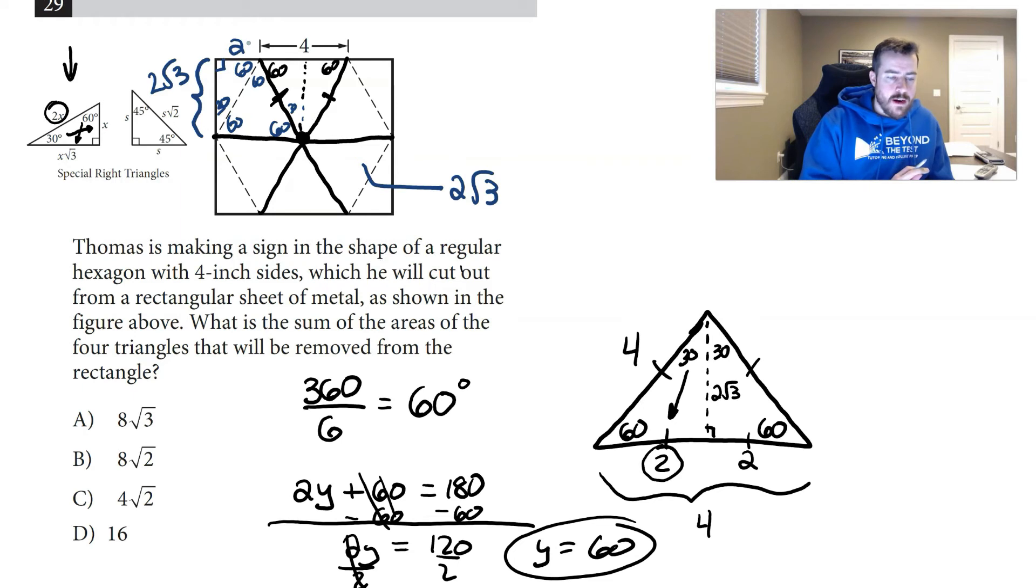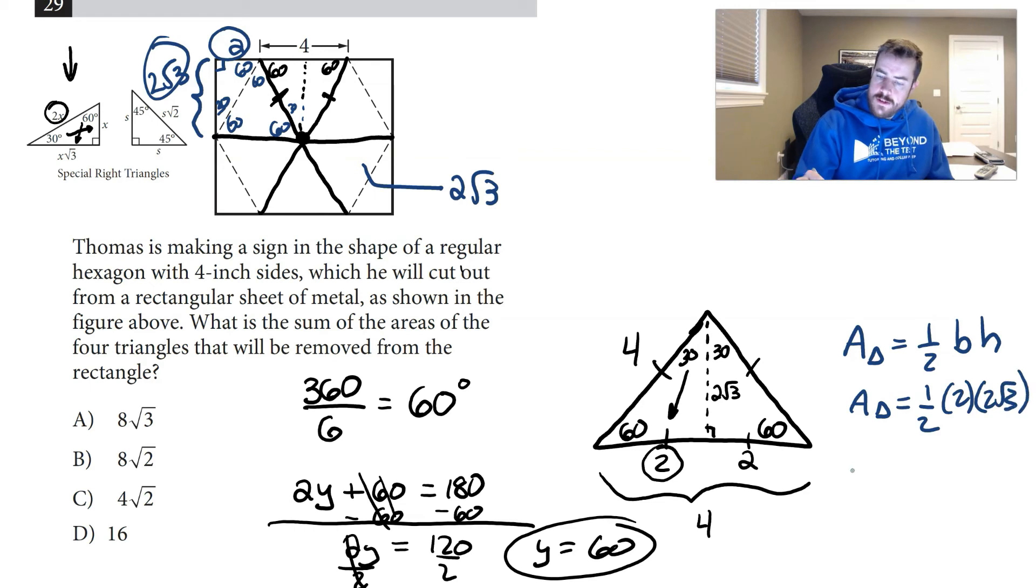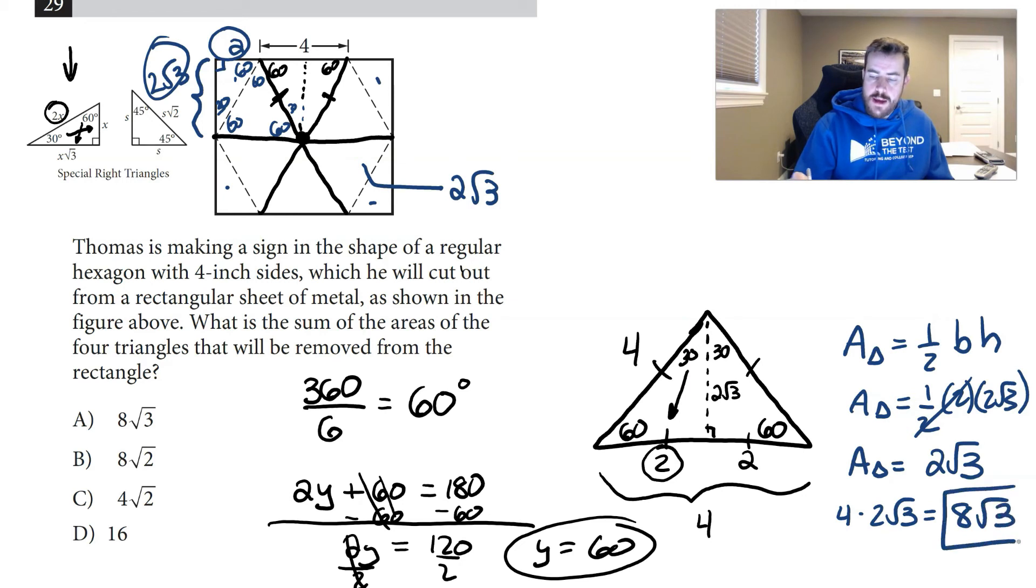If we're taking out the area of those triangles here, the area of a triangle we know is half the base times the height. The base of that triangle is 2 and the height is 2√3, so the area of that triangle is half of 2 times 2√3, which is just 2√3. Since there's 1, 2, 3, 4 triangles that were taken out, we're going to do 4 times 2√3 to get 8√3. That's why it's going to be choice A.